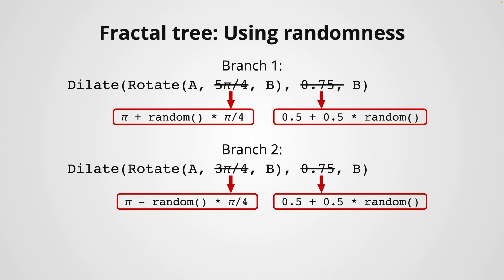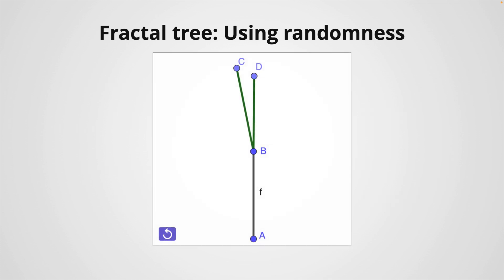Now let's see what happens when we replace those values with the following. In this case, we introduce a command random, which gives a random number between 0 and 1, so when we multiply by π/4, we obtain a value between 0 and π/4 in the first case. The result is shown here. Note that the branches are different every time I update the construction.